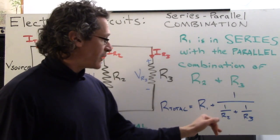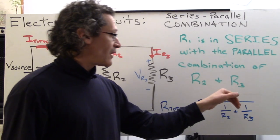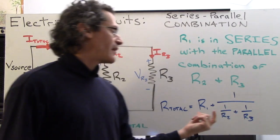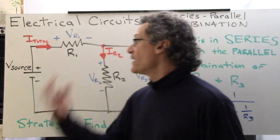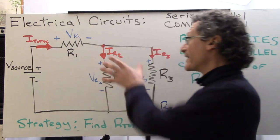R total is R1 plus the parallel combination of R2 and R3 rather. So it's 1 over (1 over R2 plus 1 over R3) for that parallel combination. So our gut check says this, the total resistance of the circuit has to be a little bit more than just R1 because we're adding some resistance here.